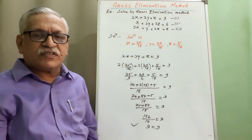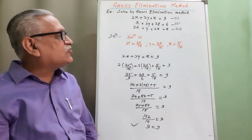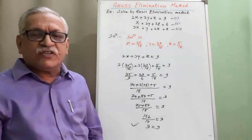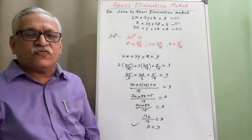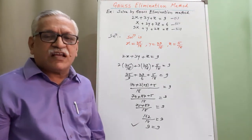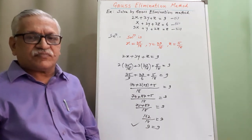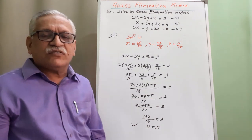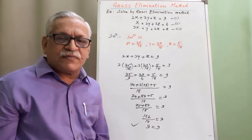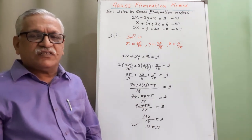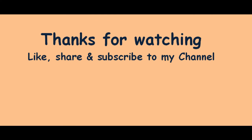Similarly, you can check for the remaining equations 2 and 3. If all equations are satisfied, we can say that the obtained solution is the correct one. In my next video, I will discuss another method to find the solution of a linear simultaneous equation, that is the Gauss-Seidel method. If you like my video, please share it and subscribe to my channel to get notifications for my new videos. Thank you.